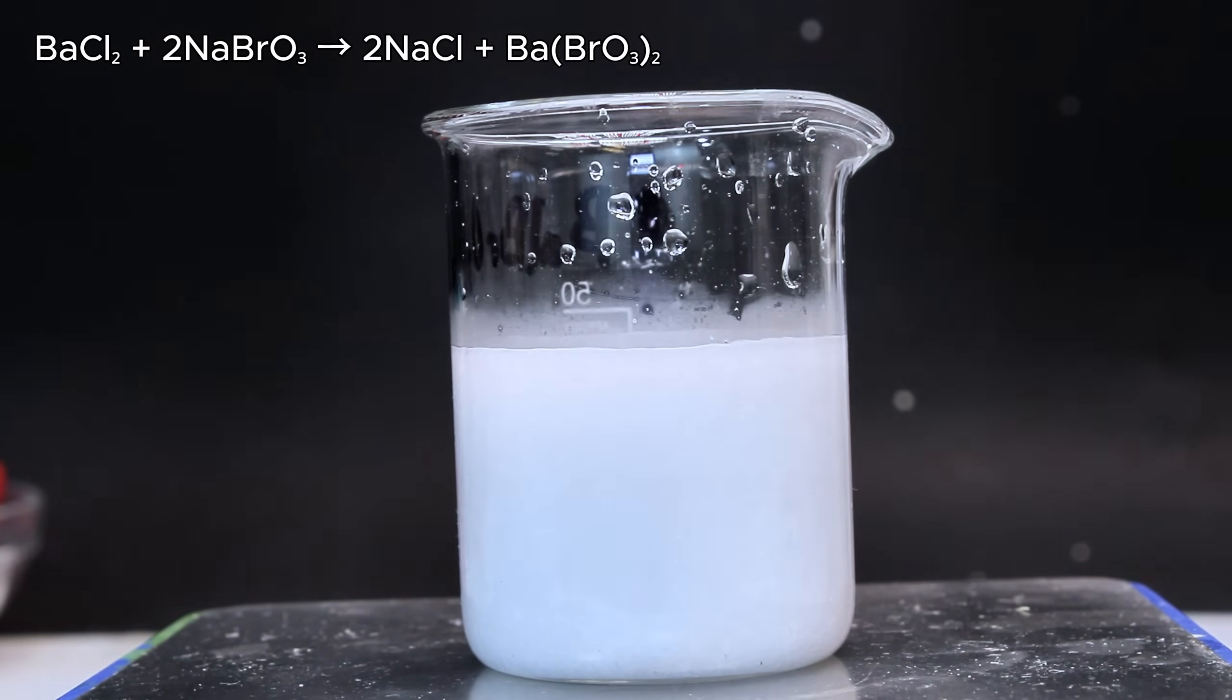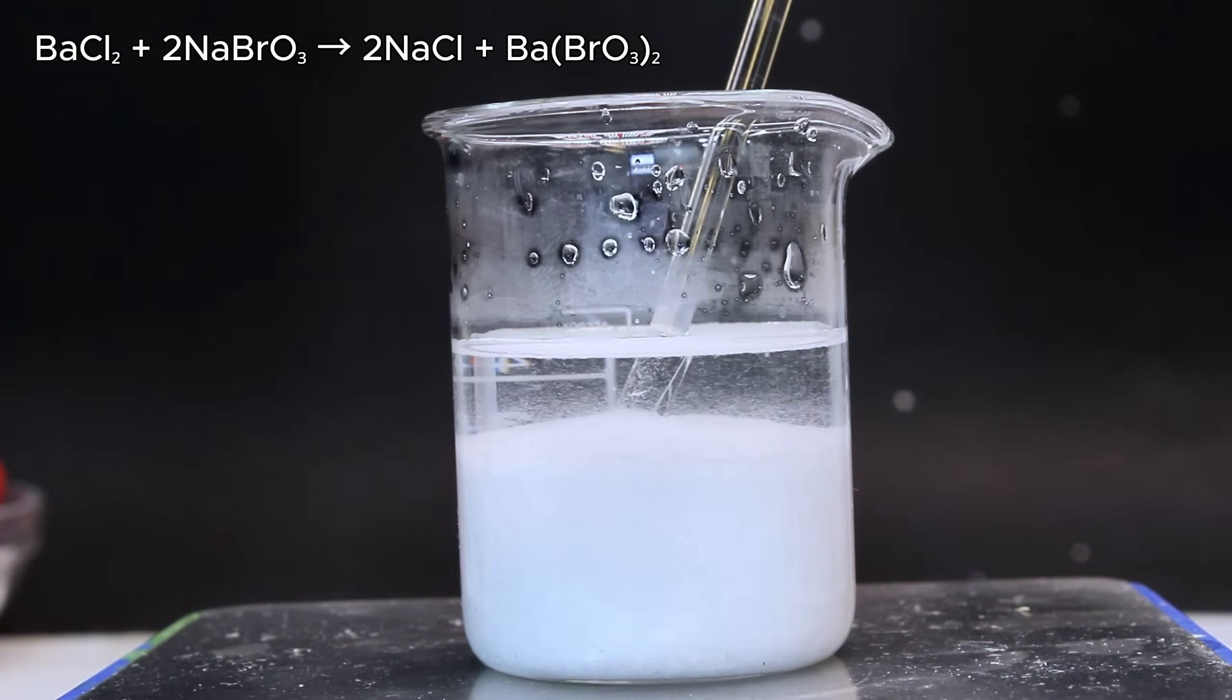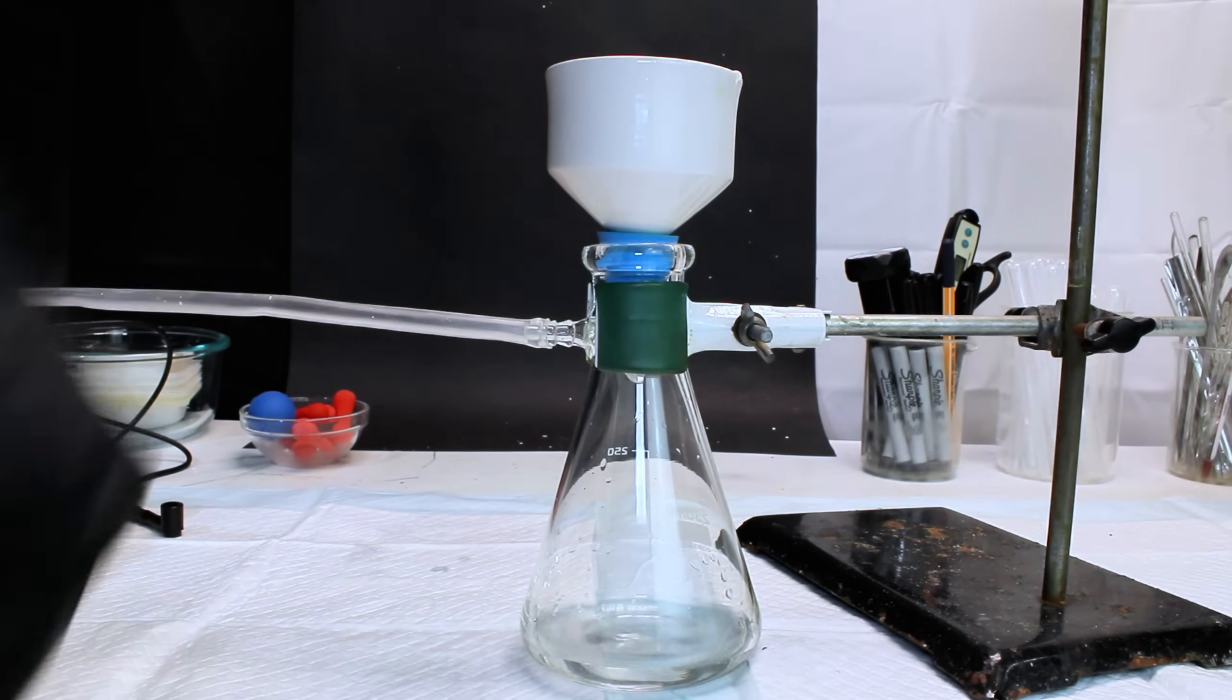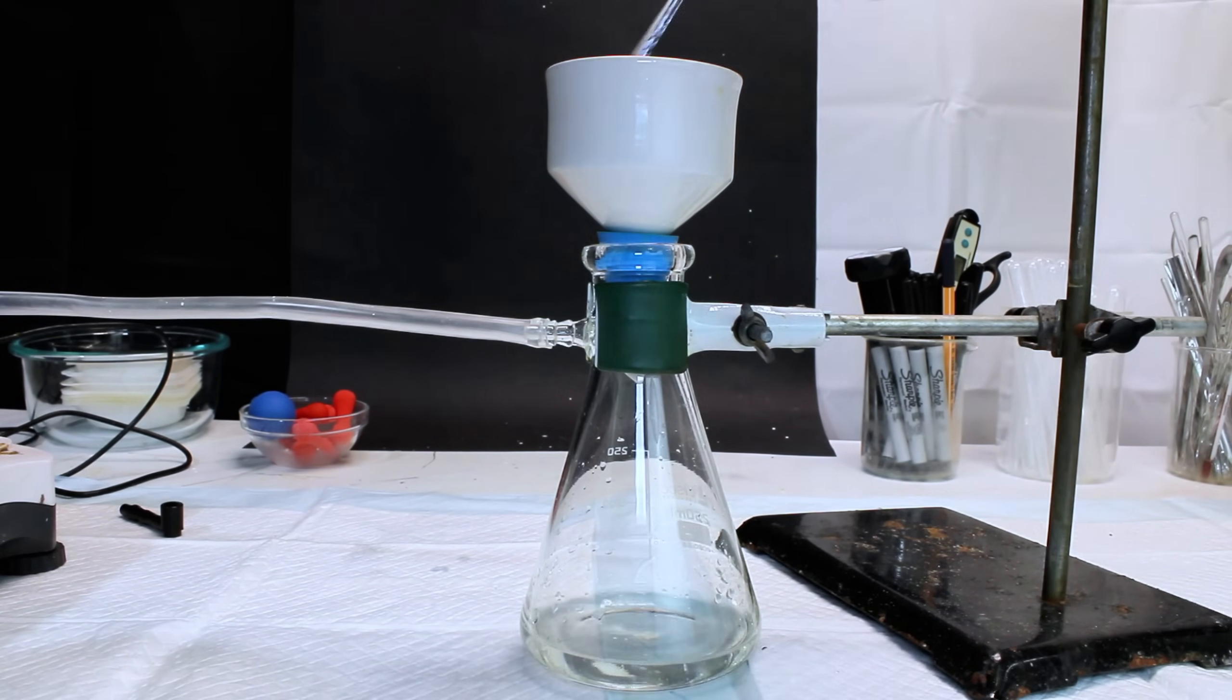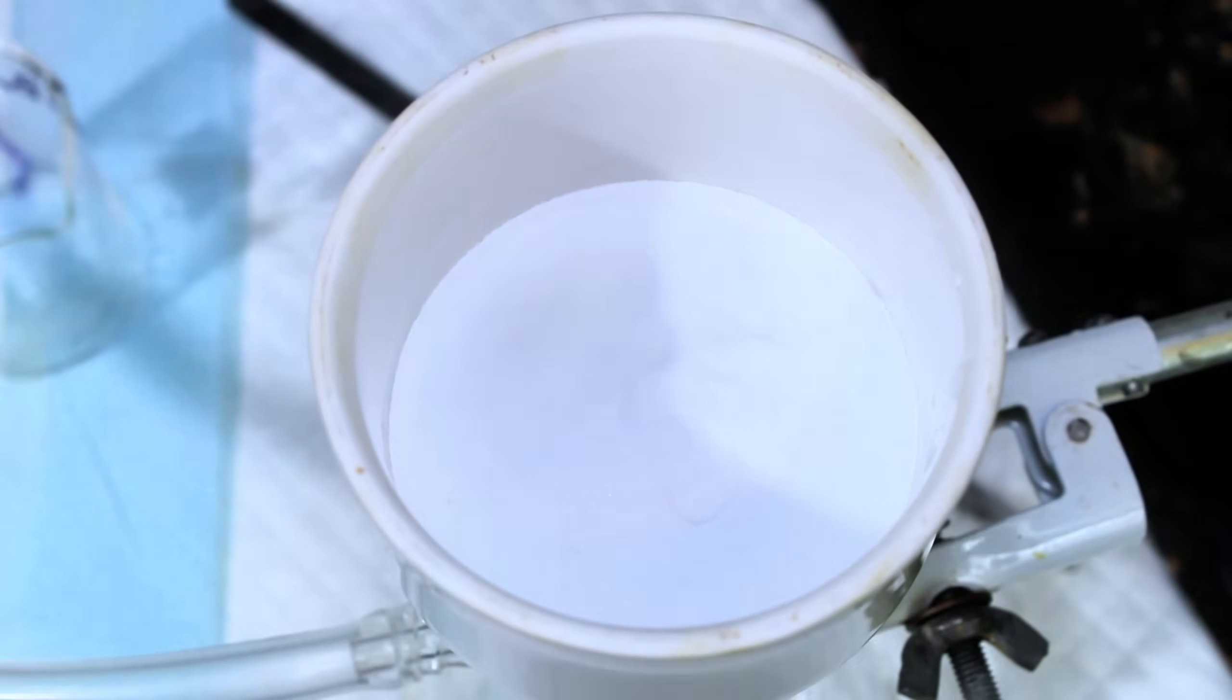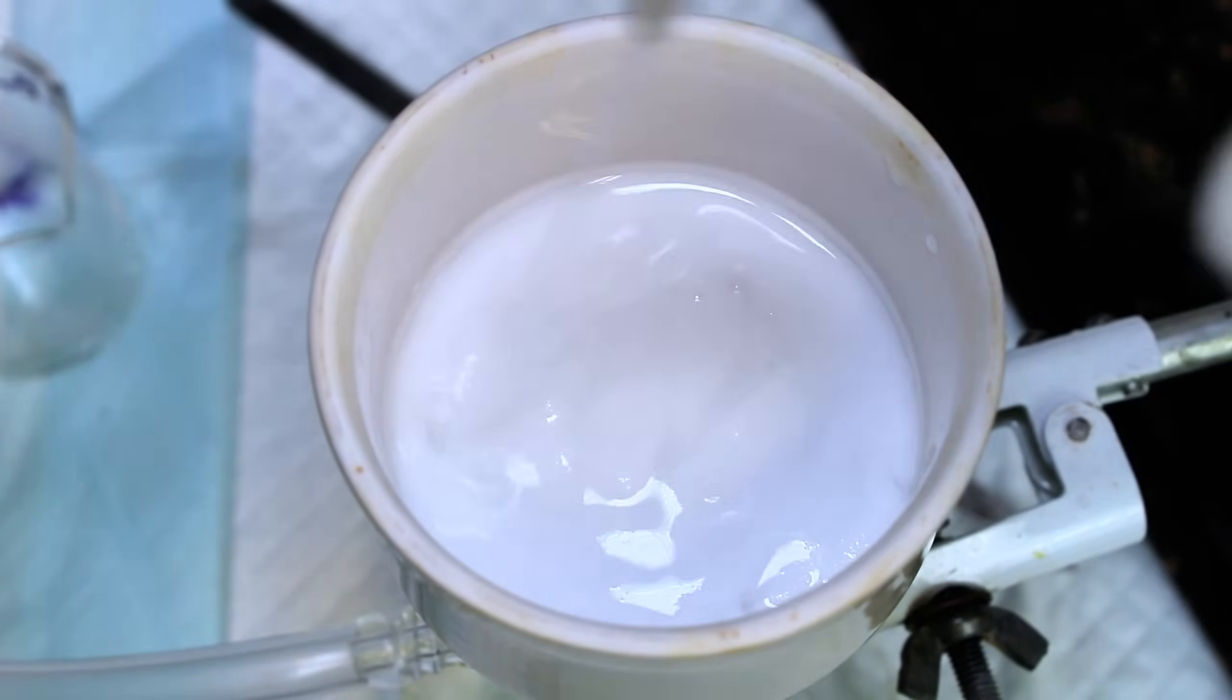To collect my salts, I simply passed each one through vacuum filtration before thoroughly rinsing each one first with cold water to remove any residual sodium chloride, and then cold isopropyl alcohol to speed up the drying process. I then scooped each of the two salts onto a couple watch glasses and allowed them to sit overnight to dry completely.